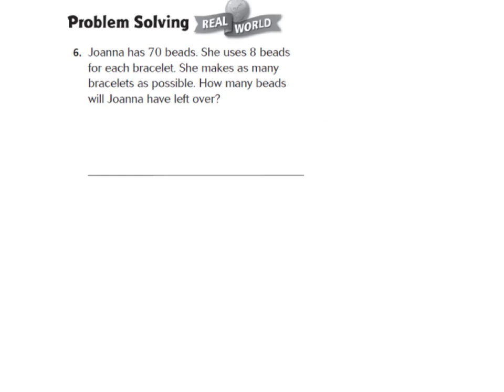All right boys and girls, let's look at number 6 in your GoMath book — draw a star next to number 6. She's going to start with 70 beads and use 8 beads for each bracelet. I want to know how many bracelets she is going to make and how many beads she will have left over. This is a division problem: 70 divided by 8.